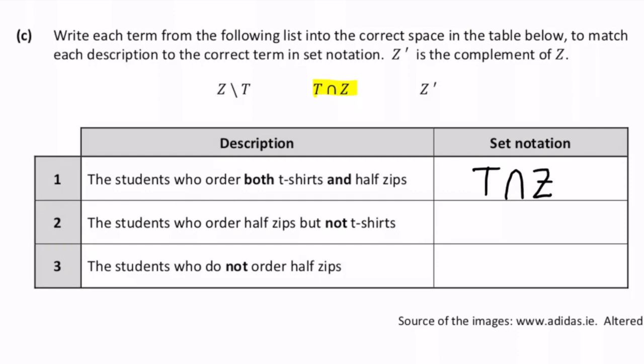Students who order half-zips but not t-shirts. That would be this answer here. Zips but not t-shirts is Z not T, or Z less T. Students who don't order half-zips. Well there's only one choice left but we can see that it's the correct answer. The complement of Z means not Z.